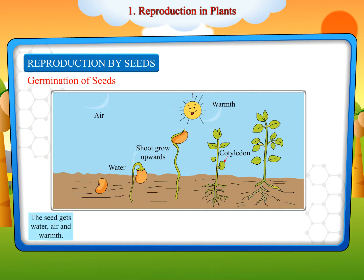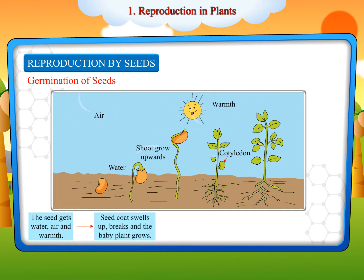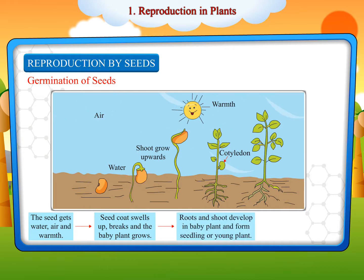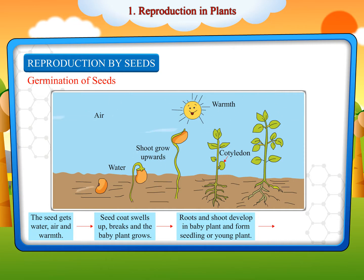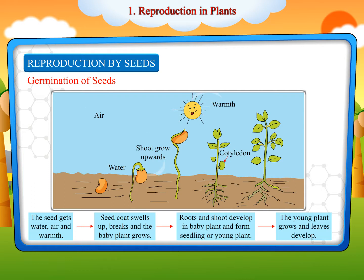The seed gets water, air and warmth. The seed coat swells up, breaks and the baby plant grows. Roots and shoot develop in the baby plant and form a seedling or young plant. The young plant grows and leaves develop.